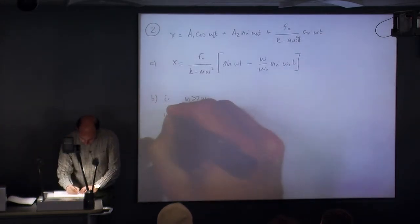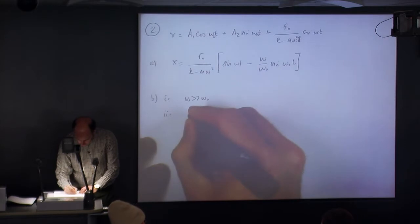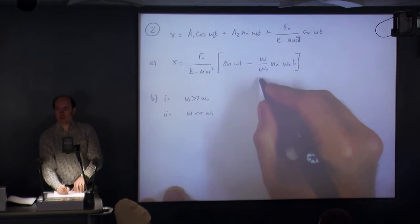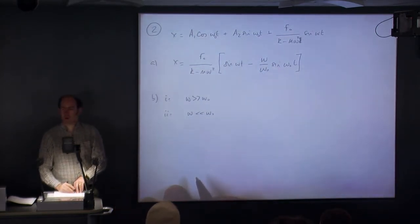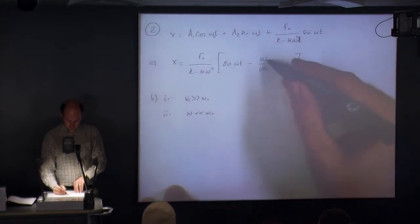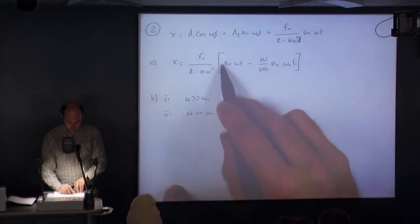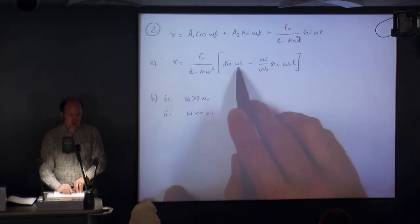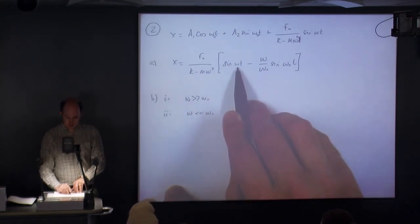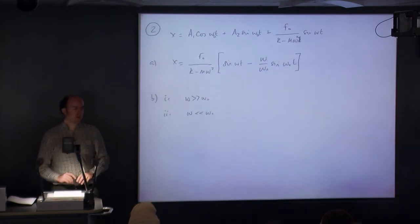Part 2, when omega is much, much smaller than omega 0, what happens to this value? If that's true, what happens to this value with respect to 1? It's going to be small, isn't it? If this value is a lot smaller than this value, then this becomes a fraction of 1. So it's going to be smaller than this one, which is 1, and so you end up with a dominant frequency, a dominant sinusoid in this frequency, omega, which is the driving frequency, and a small ripple in your natural frequency.